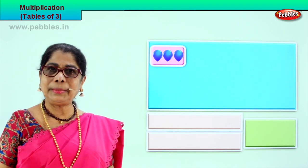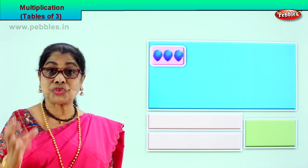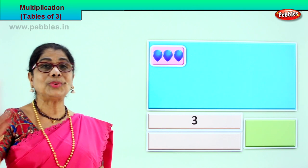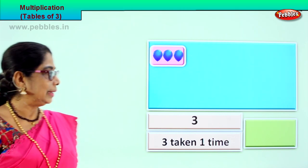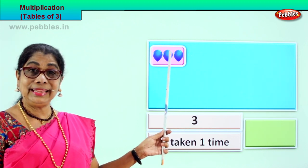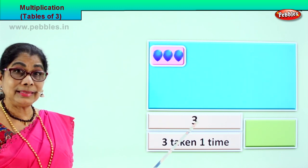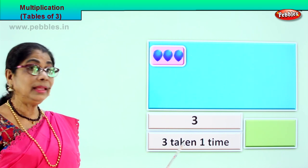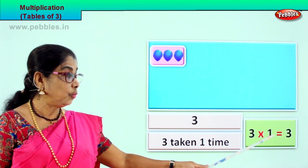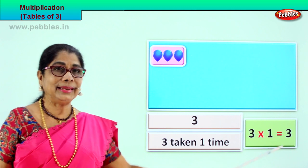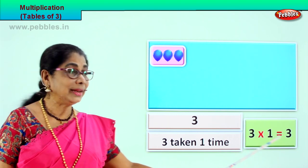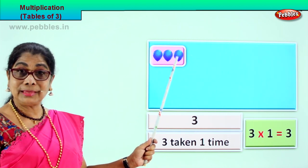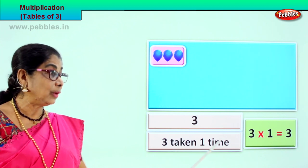Look at the first one. Look at the picture. When you see one, two, three — in one box, three balloons. Three. How many times? Three taken once. Three taken one time. So we have three — pictorial representation. Three taken one time. How will we write this? Three into one. Three into one is equal to three. How do we read it? Three ones are three. Three into one is three. Three ones are three.